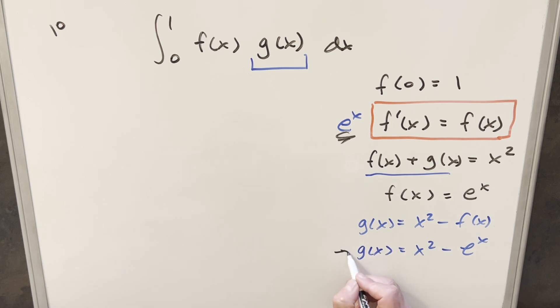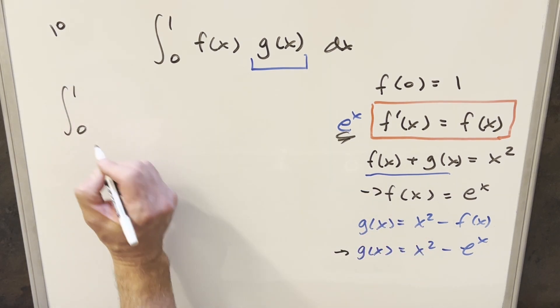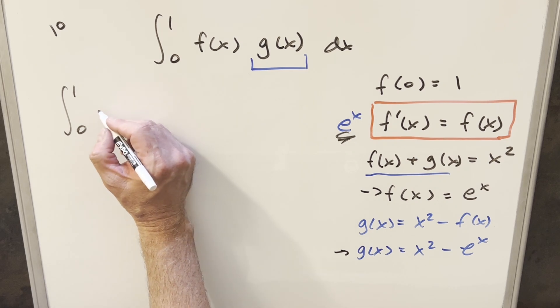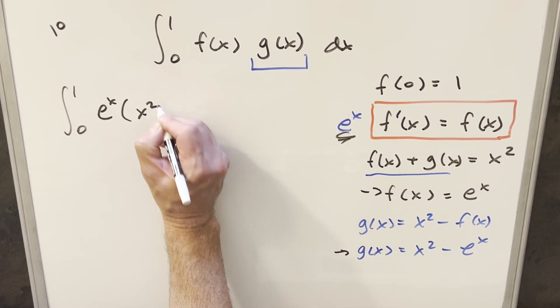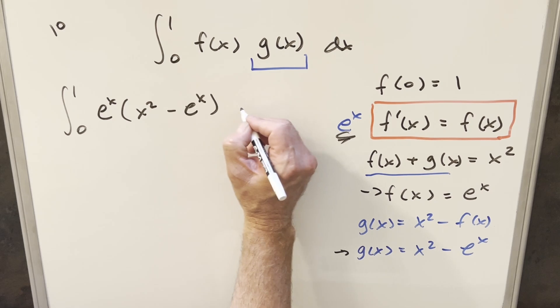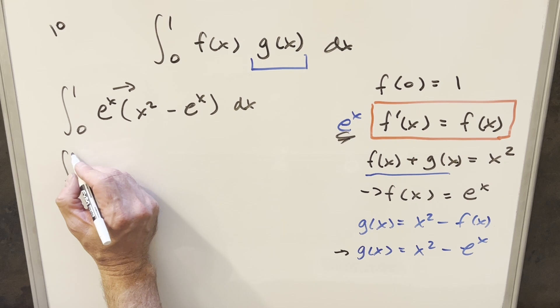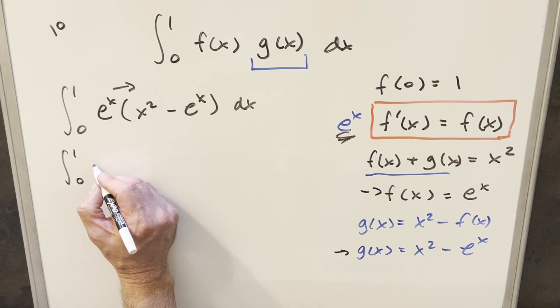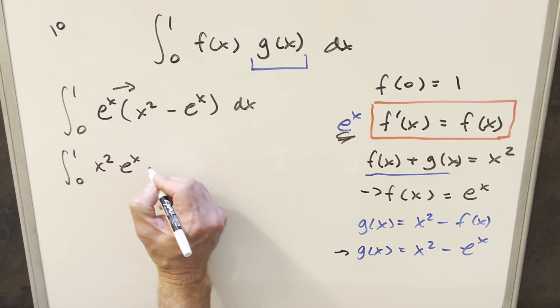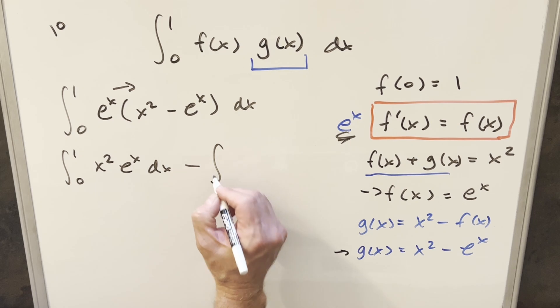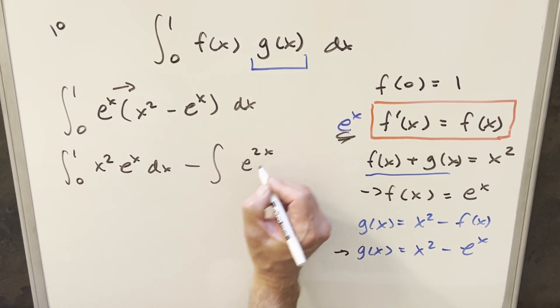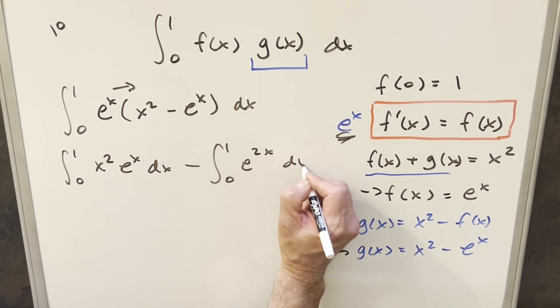So now that we have f of x and g of x, we're going to take each of these and plug it back in and integrate. So we're going from 0 to 1. f of x is e to the x. And then g of x is going to be x squared minus e to the x dx. I'll just distribute in the e to the x. So we're going to have, let's do it as two integrals. So the first one is going to be x squared e to the x dx. Our second one, e to the x times e to the x. This is just e to the 2x from 0 to 1.